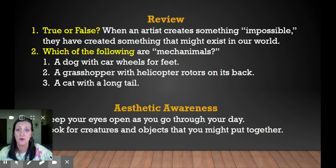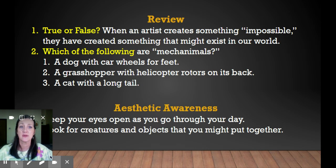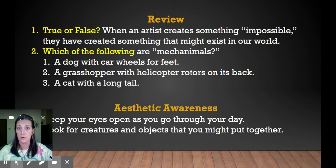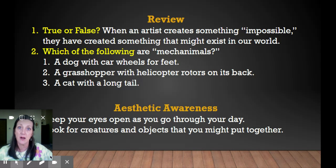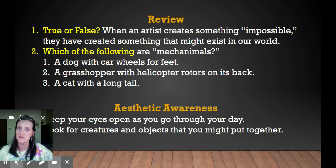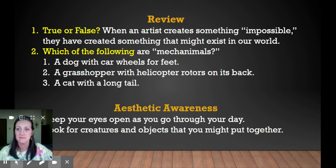Review — true or false. Number one: when an artist creates something impossible, they have created something that might exist in our world. Is that true or false? Number two: which of the following are mechanimals? A dog with car wheels for feet. A grasshopper with helicopter rotors on its back. A cat with a long tail.